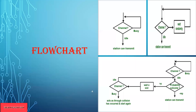Now I will explain the flowchart of each method. In one-persistent: a frame is ready, the channel checks if it is idle — if idle, the station transmits. If busy, it loops back until the channel is idle. In non-persistent, the difference is that the channel waits a random amount of time before re-checking. If idle, it transmits; if not idle, it waits randomly and checks again.